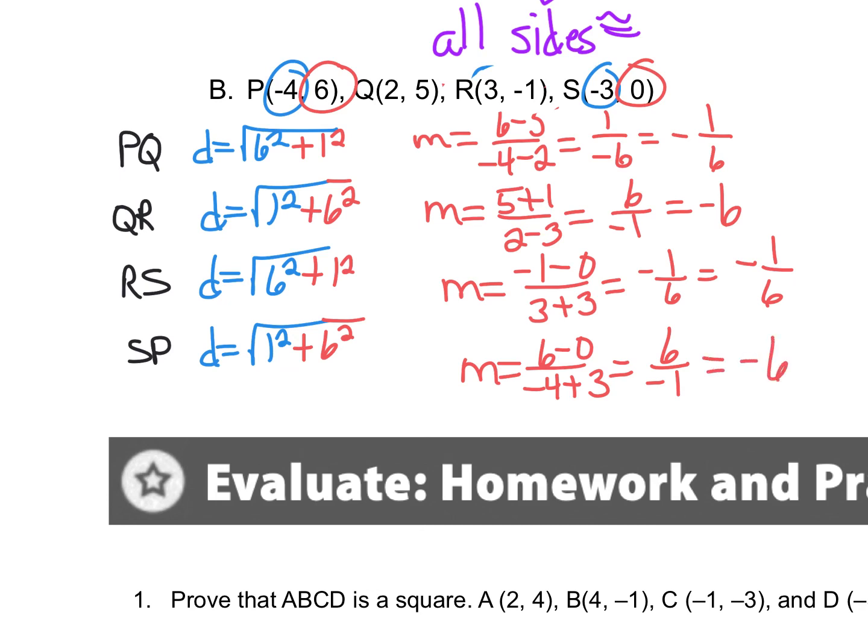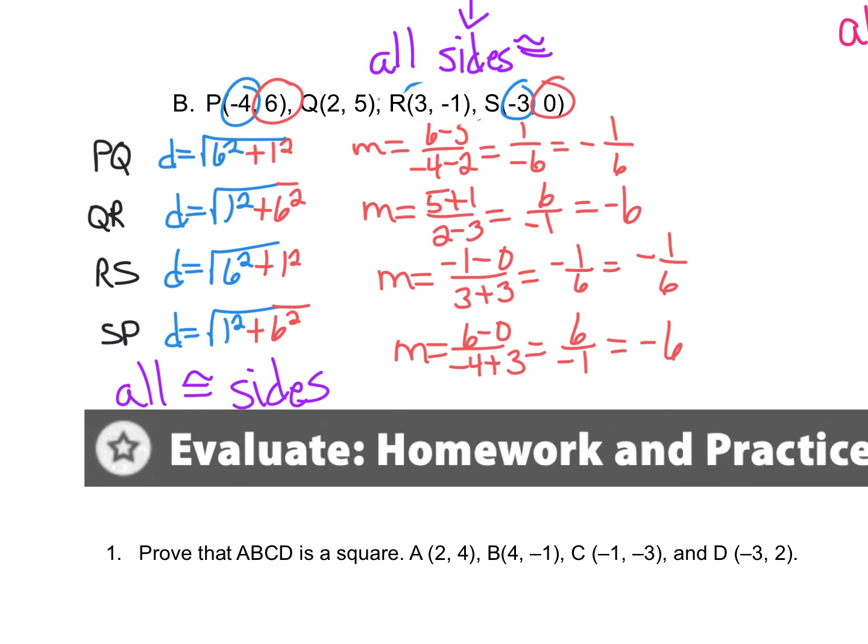All right, so all the sides are same, all congruent sides. So that makes it a rhombus, right? So I got a rhombus here. So let's look at these slopes. Now they're reciprocals, but they're all negative, so there are no right angles, so it cannot be a rectangle and it cannot be a square. So ta-da! There you have it.